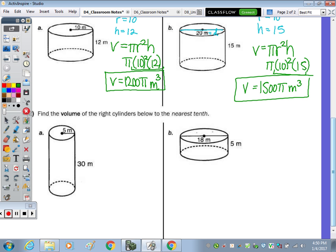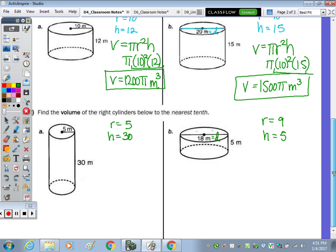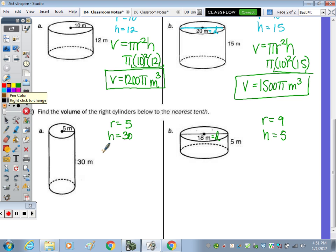Last one. Find the volume of the right cylinders below to the nearest tenth. So let's find it in terms of π again, and then we'll go to the calculator to do them in terms of the nearest tenth. So we have a radius of 5, height of 30. Radius of 9, because that's our diameter—we've got to cut it in half—and a height of 5. So formula, I'm getting that from above right here. Volume equals π times r². So plug in the 5, times a height of 30. So volume equals π times 25 times 30. And 25 times 30 is 750π.